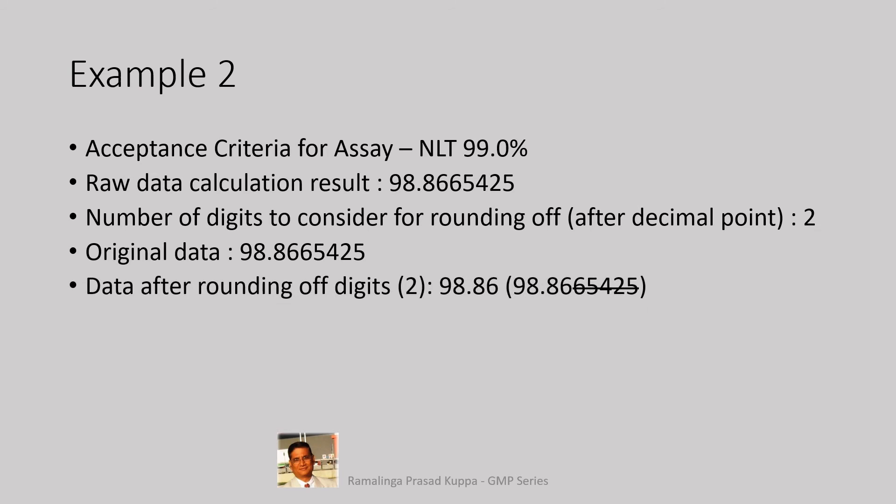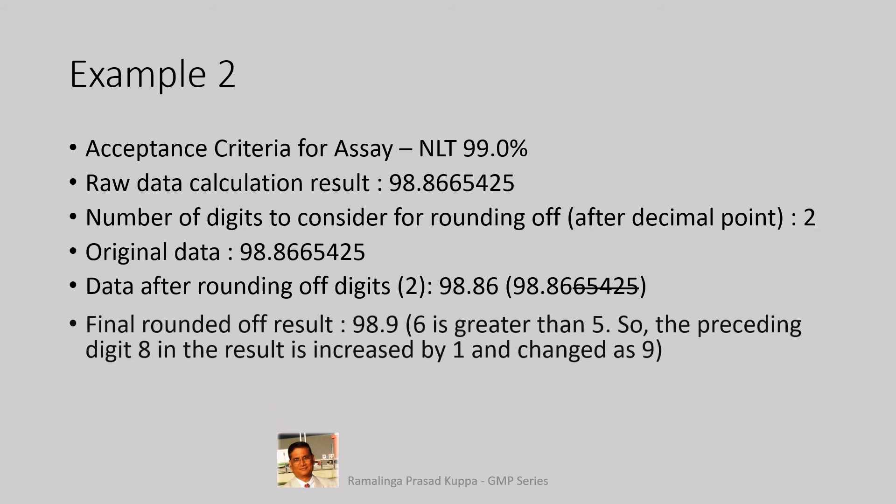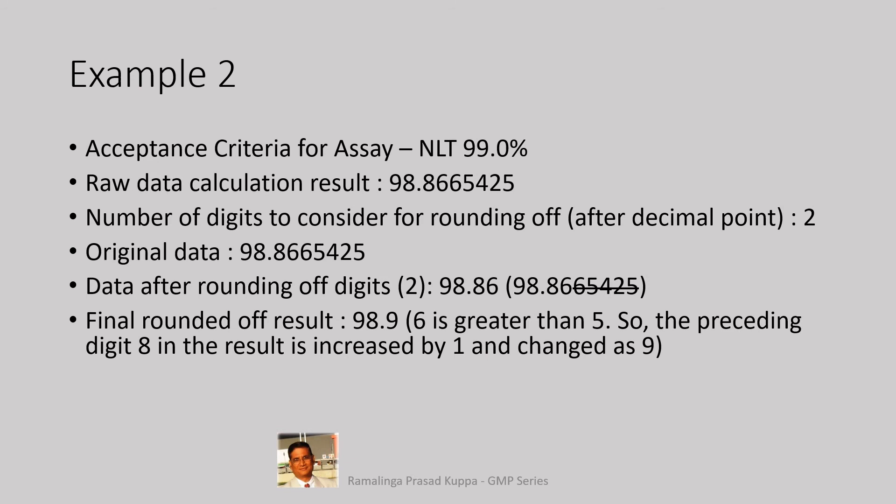Data after rounding off to 2 digits is 98.86. Data after ignoring the last 5 digits, the result is 98.86 for rounding off. Final rounded off result is 98.9. 6 is greater than 5, so the preceding digit 8 in the result is increased by 1 and changed as 9. The last digit in the result is 6, which is greater than 5. So, the preceding number 8 is rounded off to 98.9%. Reported result of assay was 98.9%. Decision fail. This is a failure value.